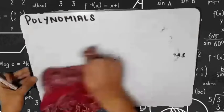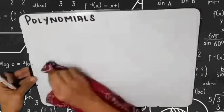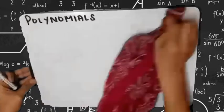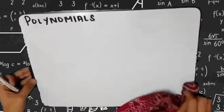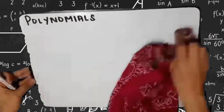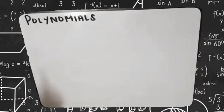That covers the types of polynomials according to the number of terms: monomial, binomial, trinomial, and multinomial for 2 or more terms.